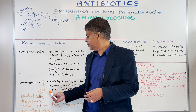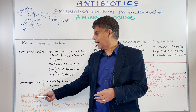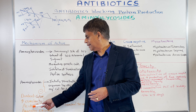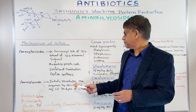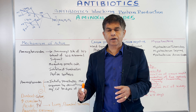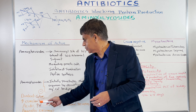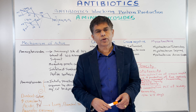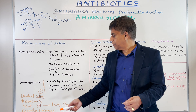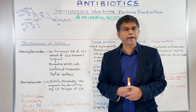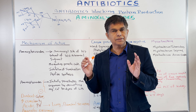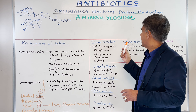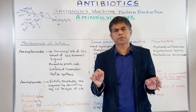Now, penetration is inhibited by a few things we also need to know: divalent cations, increased osmolality, acidic pH, and anaerobic environment. These conditions make it hard for the antibiotic to penetrate the organism. Why is this important clinically? When you have acidic pH — for example, in the lung where bronchial secretions have a very high acidic pH — this may not be a good drug choice; it might not work. And in an anaerobic environment, it's not going to work very well. That's why coverage is aerobic gram-negative — remember those two points, they're very important.